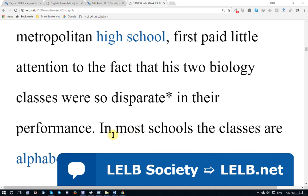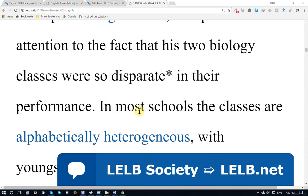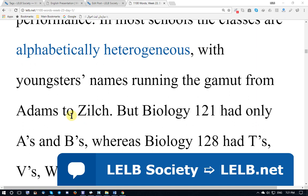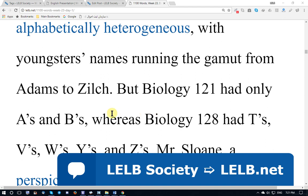He was a biology teacher — a branch of science. His two biology classes were so disparate in their performance. In most schools the classes are alphabetically heterogeneous, including various letters from A to Z, with students' names running the gamut — the range — from Adam to Zilch, from A to Z. But Biology 101 had only A's and B's — the alphabets.